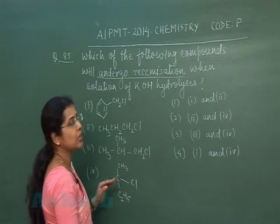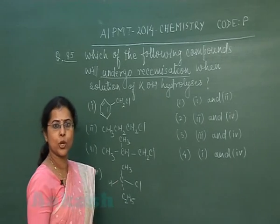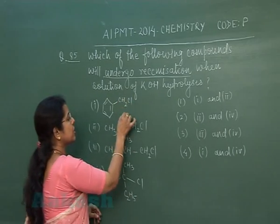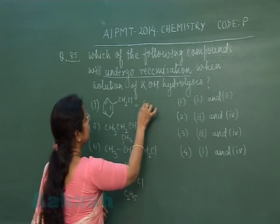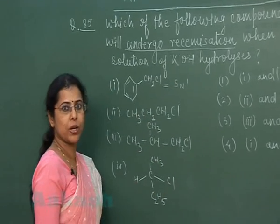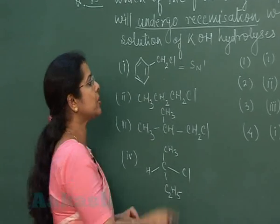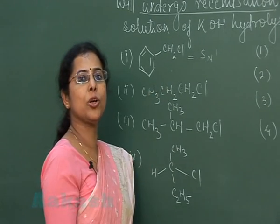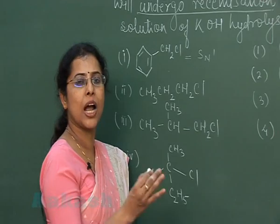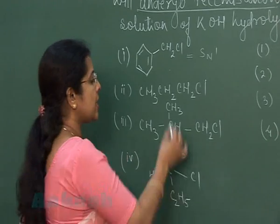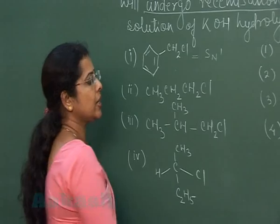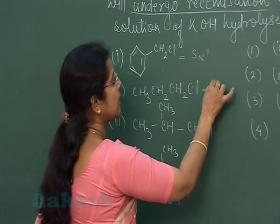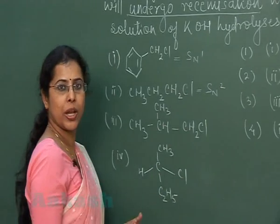When these compounds are treated with KOH, nucleophilic substitution takes place. The first structure is benzoyl chloride — the reaction proceeds via SN1, but the initial compound is not optically active, so the product cannot be a racemic mixture. The second compound is propyl chloride, which is a primary halide, and primary halides react via SN2 mechanism, so there is no possibility of racemization.